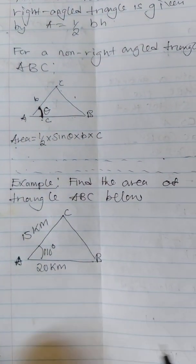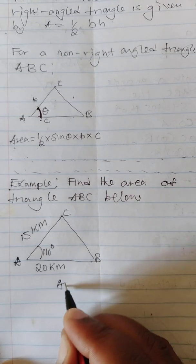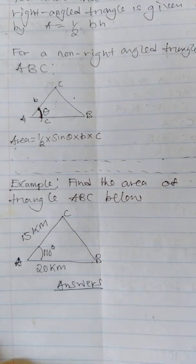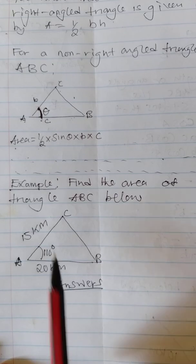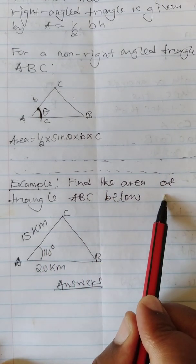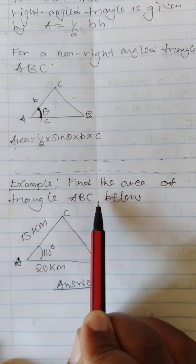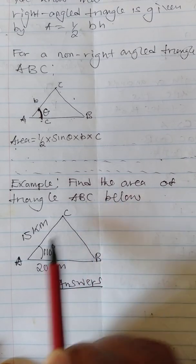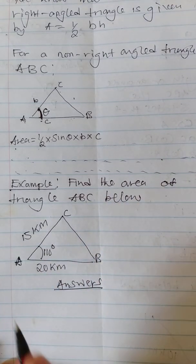Let's look at an example. We are saying find the area of triangle ABC below. We have this one, so the general formula is that area is equal to half.